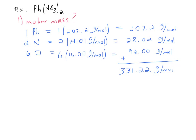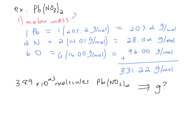Now let's do an example. Let's say we have 3.89 times 10 to the 23rd molecules of Pb(NO3)2. I want to know how many grams is this? You'll start with 3.89 times 10 to the 23rd molecules. Because we're talking about molecules, we've got to get rid of it — we want to get to grams. So let's put molecules on the bottom so that they'll cancel out.